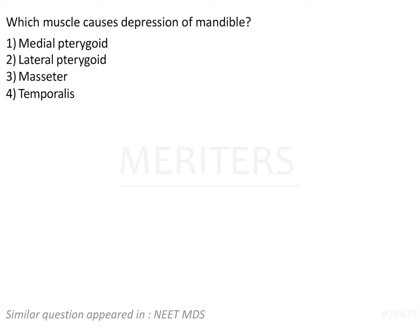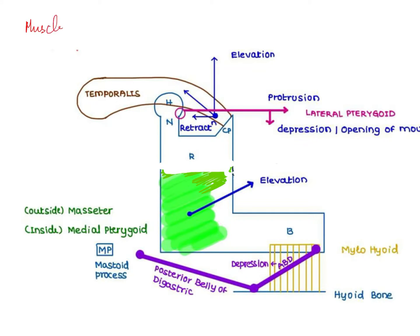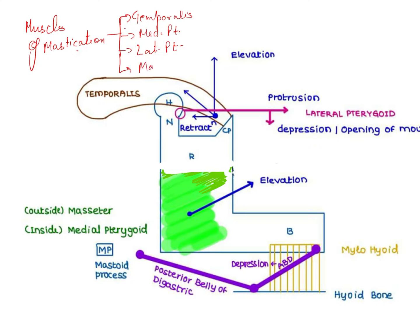Which muscle causes depression of the mandible? The options are medial pterygoid, lateral pterygoid, masseter, and temporalis. I will give you an illustration to show the various muscles of mastication and their function. The muscles of mastication arise from the first pharyngeal arch, and these are going to be your temporalis, medial pterygoid, lateral pterygoid, and masseter. There is also some contribution from certain infrahyoid muscles, but here the main focus is the function of these muscles.